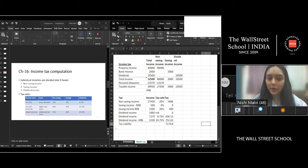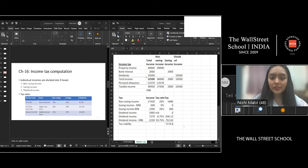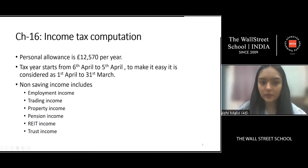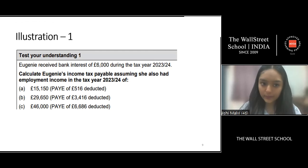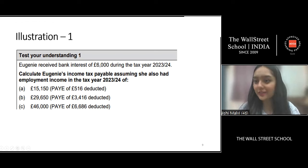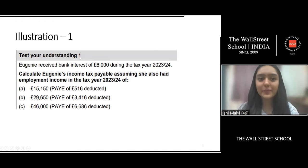We've completed one worked question. Now your homework: do Test Your Understanding 1 on page 516. You have to deduct your tax liabilities as instructed. Make sure you don't copy from the answers given — if you copy, you won't learn from your mistakes. See you guys in the next lecture!